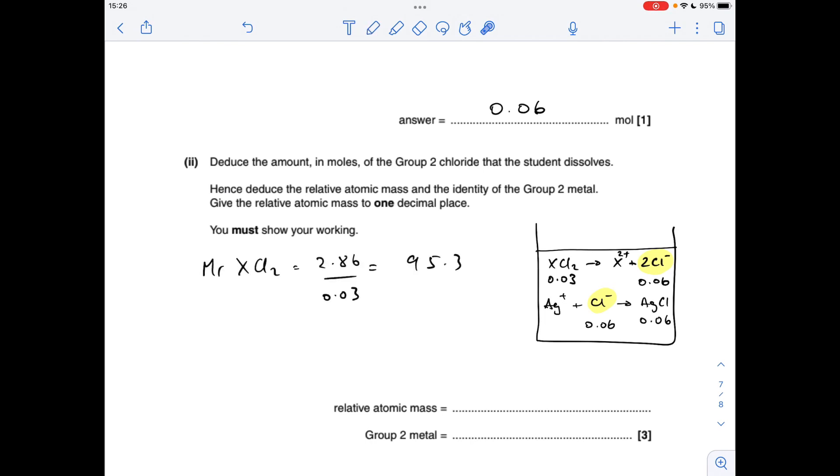So from that, we can work out the MR of XCl2—mass over moles—95.3. We know there's two chlorines in there. So if we subtract the MR of 2 chlorines at 71, we get a remainder of 24.3. So that's obviously the relative atomic mass of X. Which member of group 2 has that MR? Magnesium.